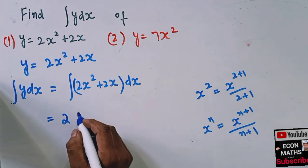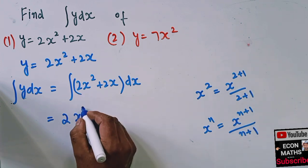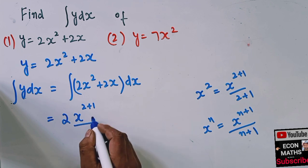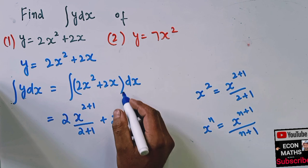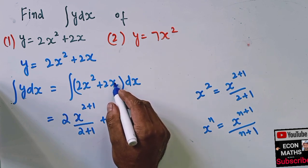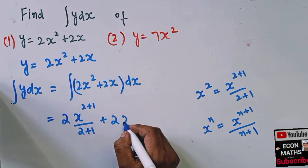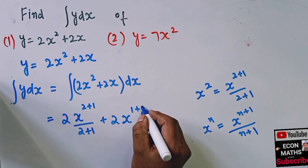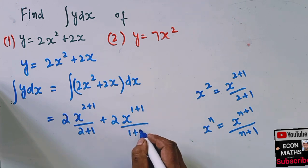So in the case of n equals 2, we will have x raised to the power 2 plus 1 dividing with the resulting exponent that is 2 plus 1. Plus then we have this 2, and similarly x is raised to the power 1, so we add it with 1 plus 1 divided by 1 plus 1, and then we add the constant of integration.